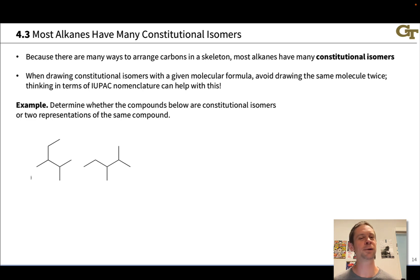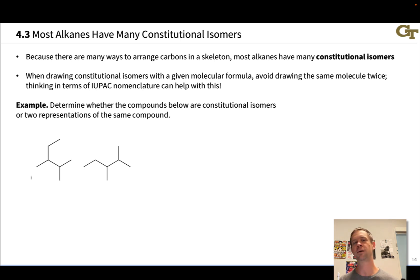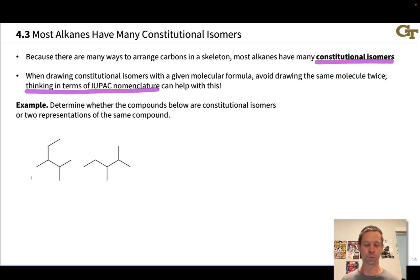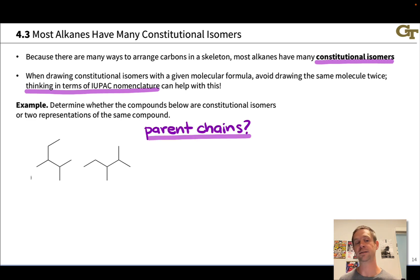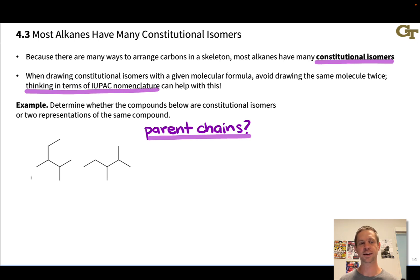But they might be two equivalent representations of the same compound. To check that, we can go through the process of naming the two. If their names come out the same, they are necessarily identical compounds. This is the beauty of the IUPAC nomenclature system — thinking in terms of IUPAC nomenclature is one way we can systematically evaluate whether two structures are the same or not. Let's do that, starting with the parent chains in each compound.